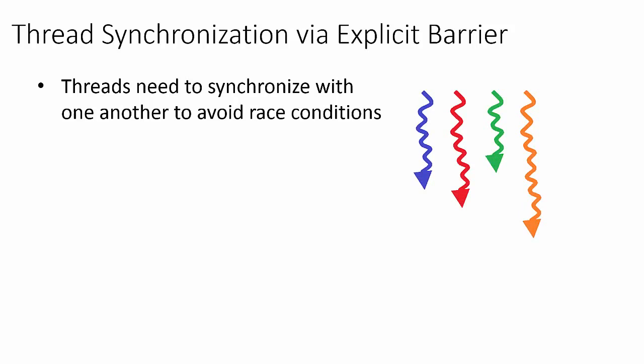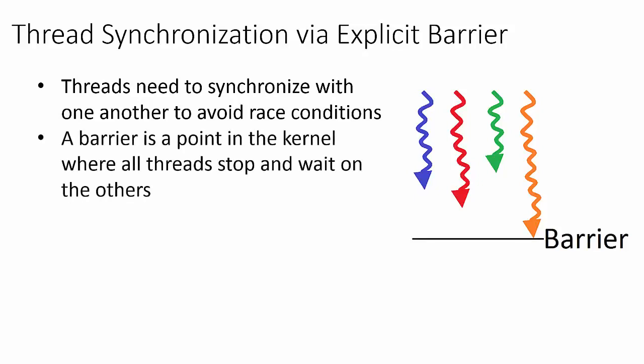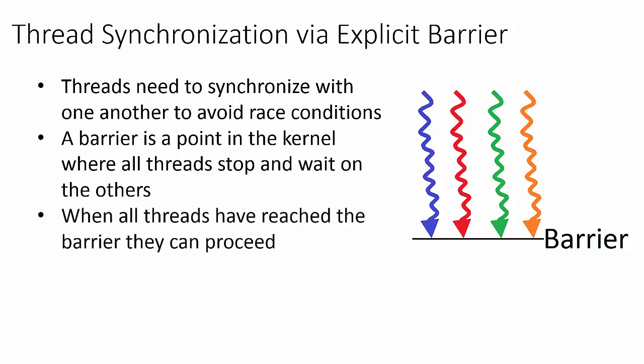For illustrative purposes, let's assume we have four threads within a block executing in parallel. At a point in the kernel where we need the threads to synchronize, we can implement a barrier, which will cause each thread within this block to pause at this point until all of the threads within this block have reached the barrier. Now, once all the threads within a specific block have reached this barrier point, we then say that the threads have been synchronized, and the threads within this block are then allowed to continue their execution.